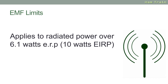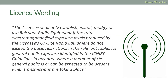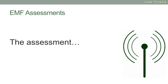The wording of the license is on screen now: "The licensee shall only establish, install, modify, or use relevant radio equipment if the total electromagnetic field exposure levels produced by the licensee's on-site radio equipment do not exceed the basic restrictions in the relevant tables for general public exposure identified in the ICNIRP guidelines, in any area where a member of the general public is or can be expected to be present when transmissions are taking place."